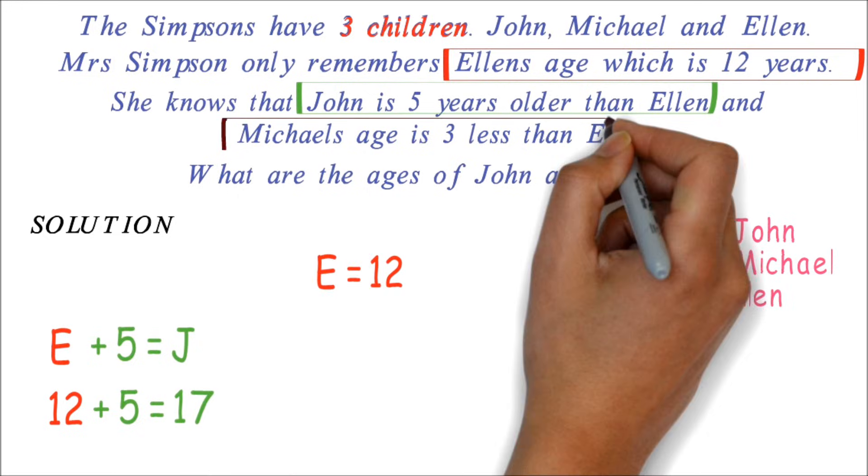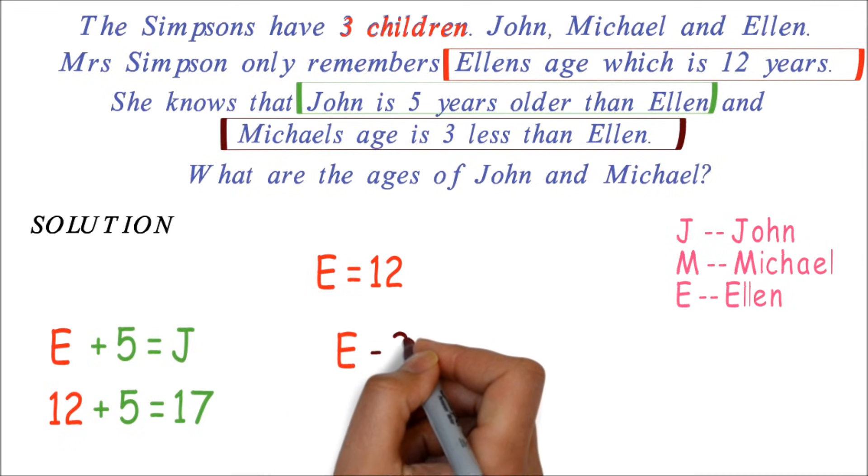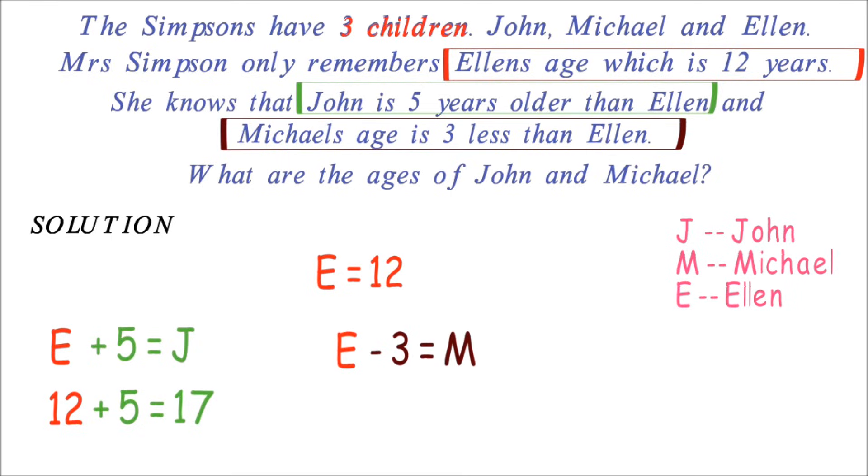The next information is Michael's age is 3 years less than Ellen. Again, we know we represent less than as minus. We have E minus 3 equals M. This will be 12 minus 3, which is 9. Therefore, John's age is 17 years, and Michael's age is 9 years.